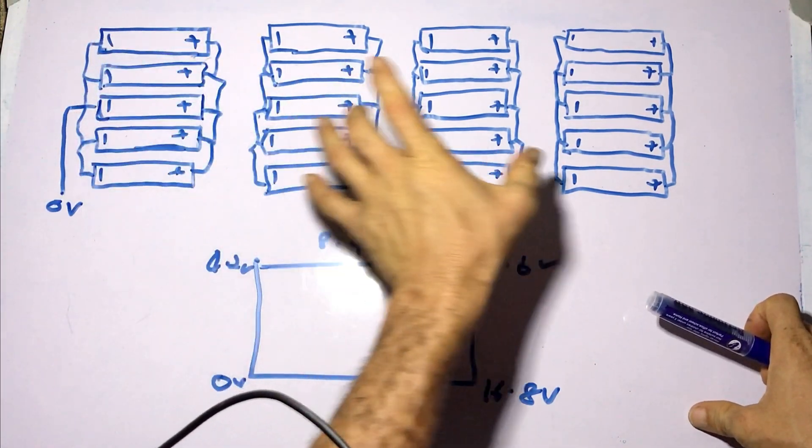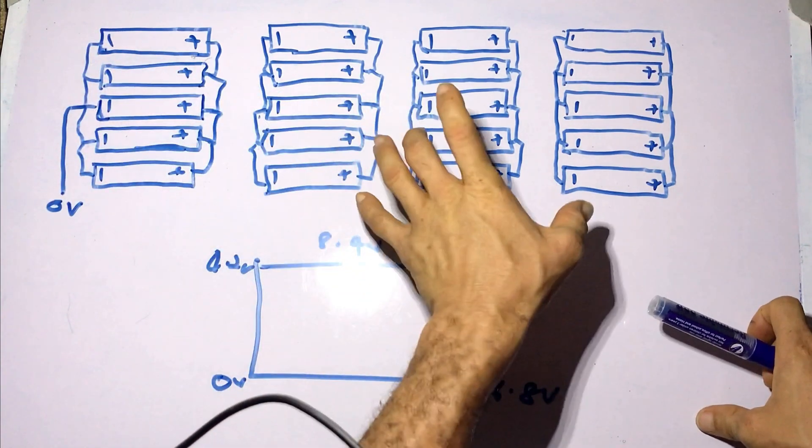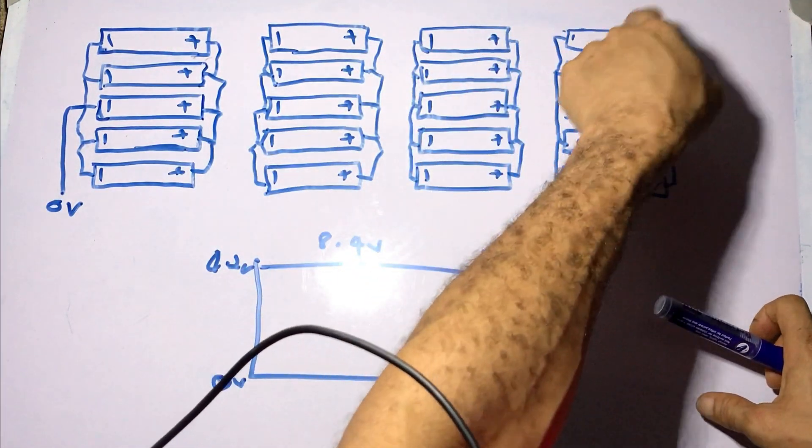So we assume that the cells are fully charged, or each of the battery packs is fully charged. And we have 4.2 volts, 4.2 volts, 4.2 volts, and 4.2 volts.